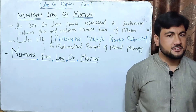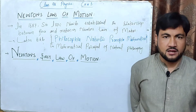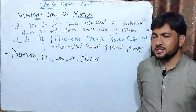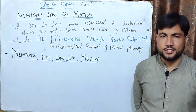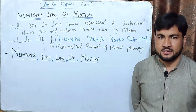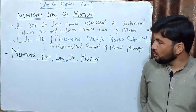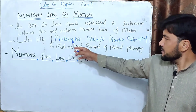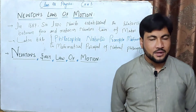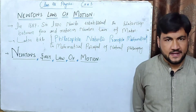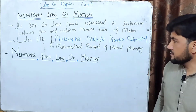Newton's contribution to mechanics came in the 17th century. Sir Isaac Newton established the relationship between force and motion of objects. His famous work is titled Philosophia Naturalis Principia Mathematica, which in English is translated as Mathematical Principles of Natural Philosophy.